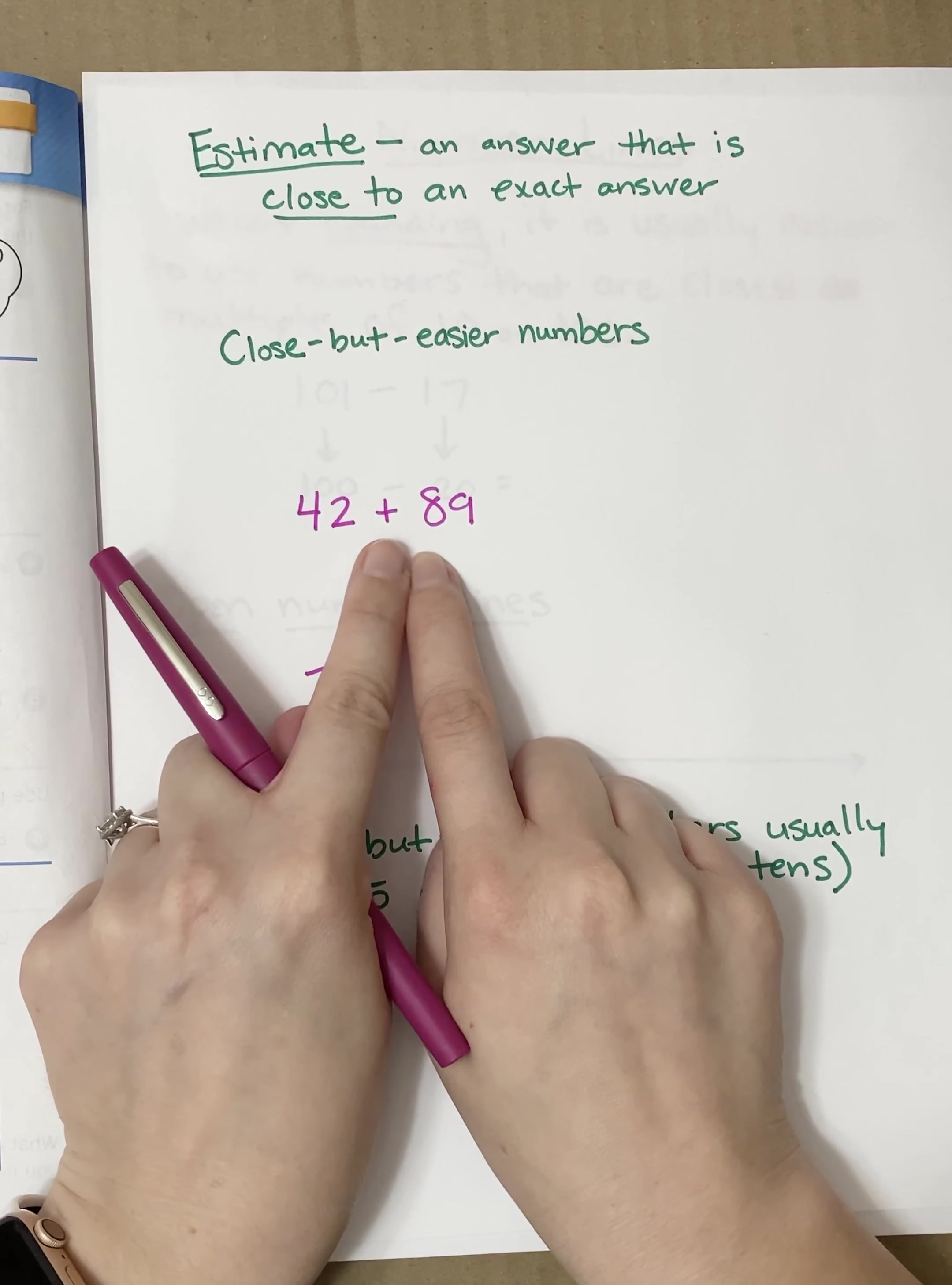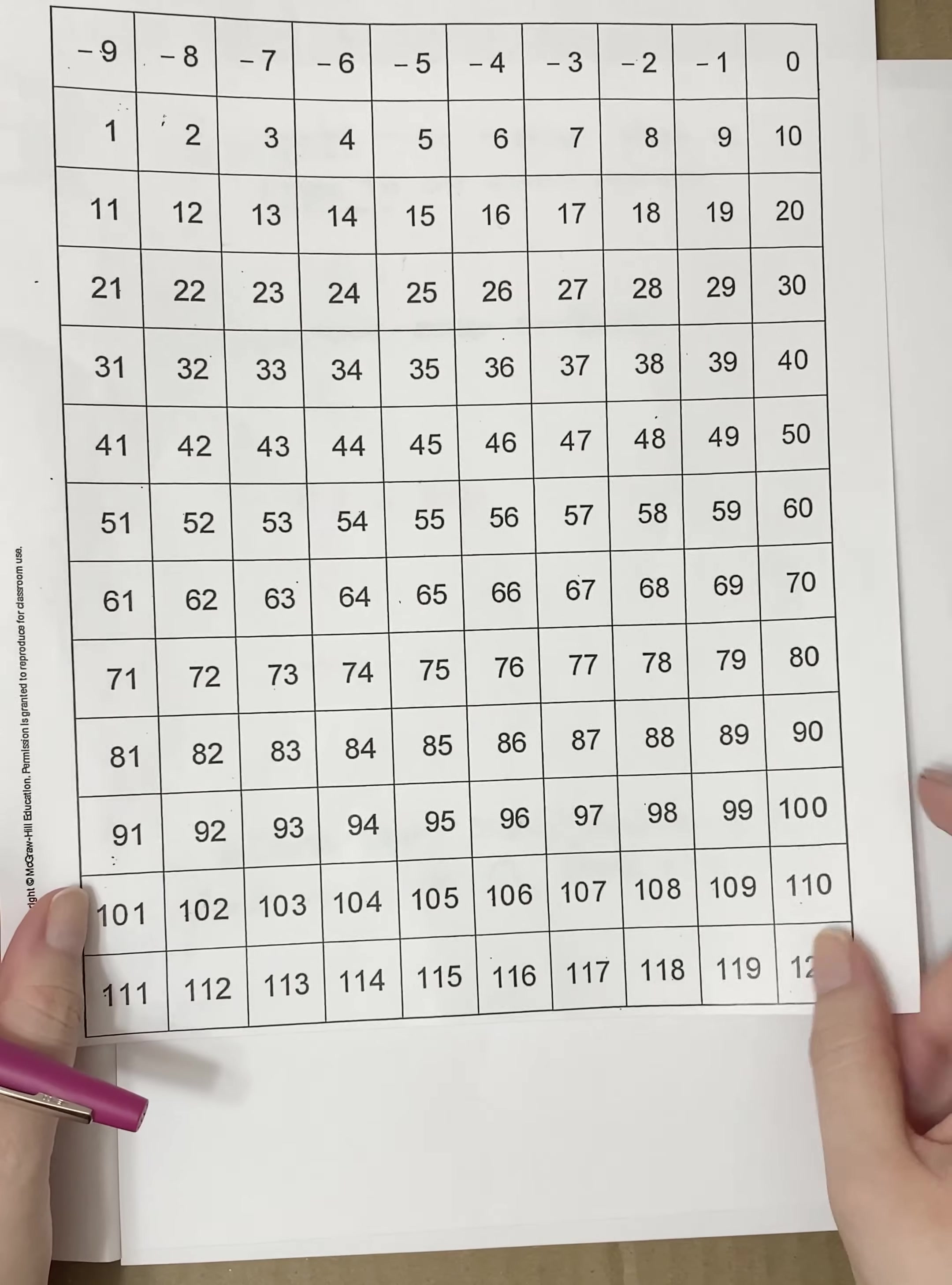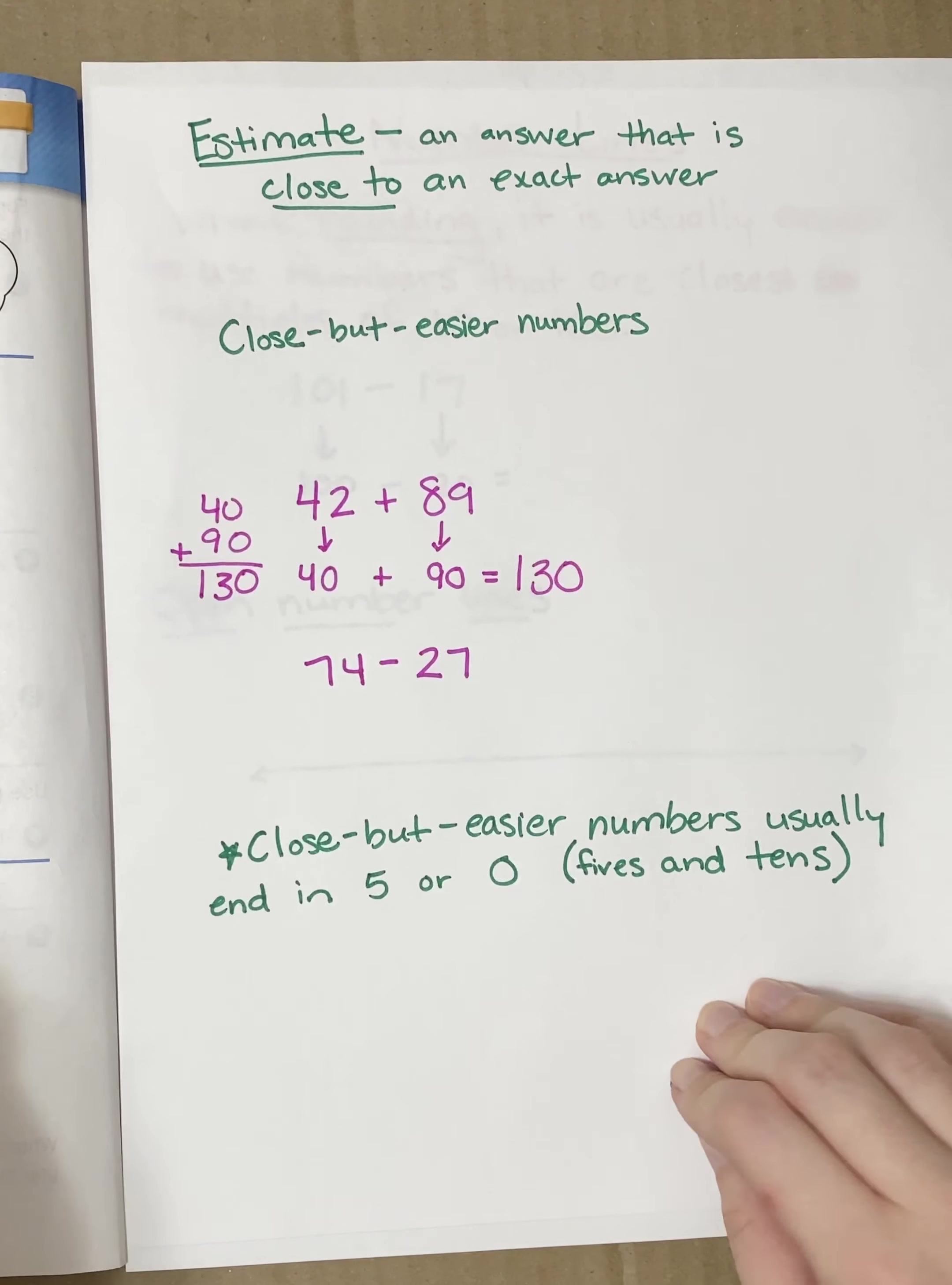So I want to show you what that looks like. Say I have this problem 42 plus 89. It's hard to do that in my head. So what I want to do is pick close to numbers, close but easier. So 42, if I look on my number grid, there's 42. It's only two jumps away from 40. So I'm gonna change 42 to 40. And 89, let's look on our number grid. 89 is really close to 90. I like that number a lot better. So I'm gonna switch to 90. Now I have 40 plus 90 which is a little bit easier to add. And if I could write it up and down like this because 0 plus 0 is 0, 4 plus 9 is 13.